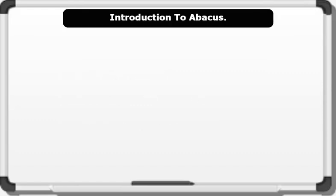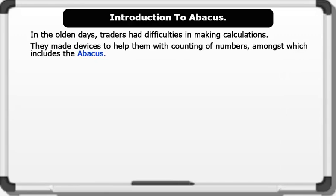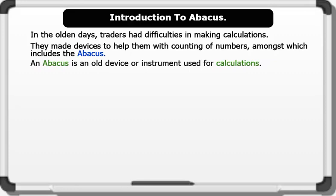Introduction to Abacus. In the olden days, traders had difficulties in making calculations. So they made devices to help them with counting of numbers, amongst which includes the abacus. An abacus is an old device, or instrument, used for calculations.